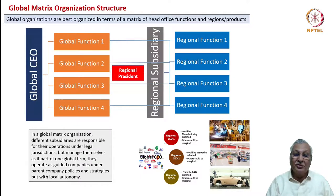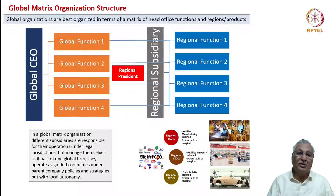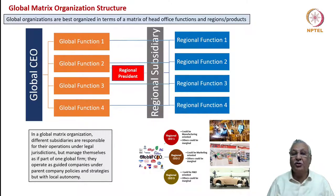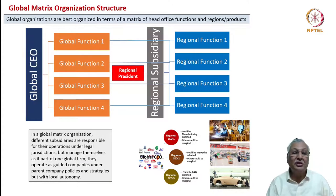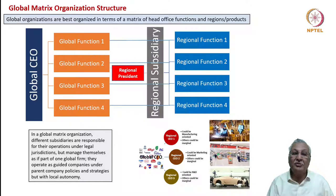In such complex global matrix organization structures, you have CEO-like subsidiary heads — that is, managing directors and chief executive officers of national subsidiaries — and finally the global CEO. These CEO positions are very critical and singular positions having responsibility for a wide variety of functional specialties.